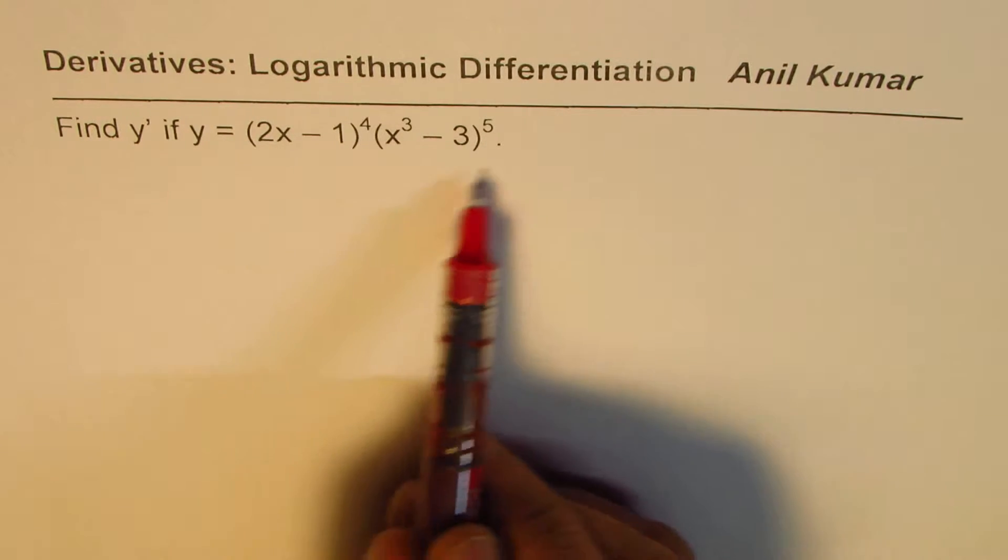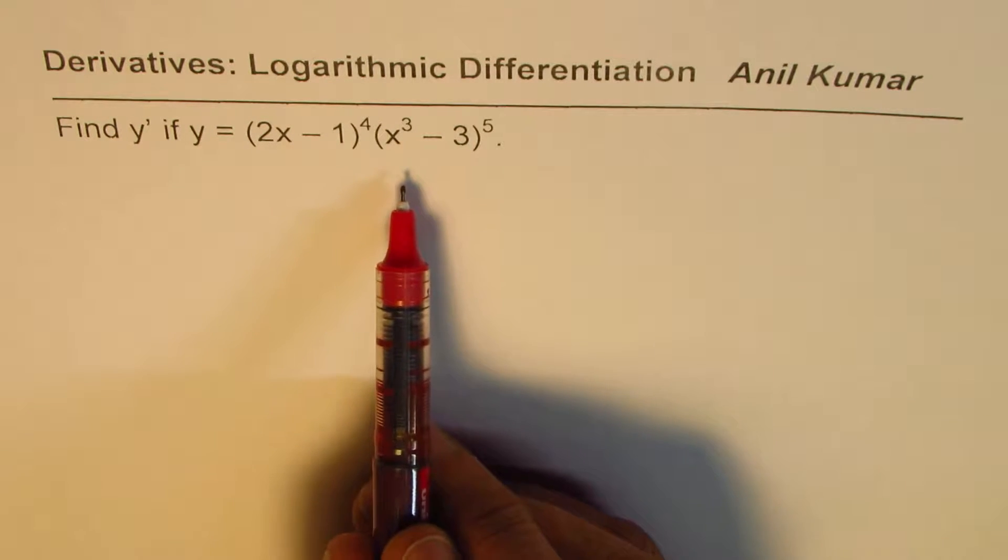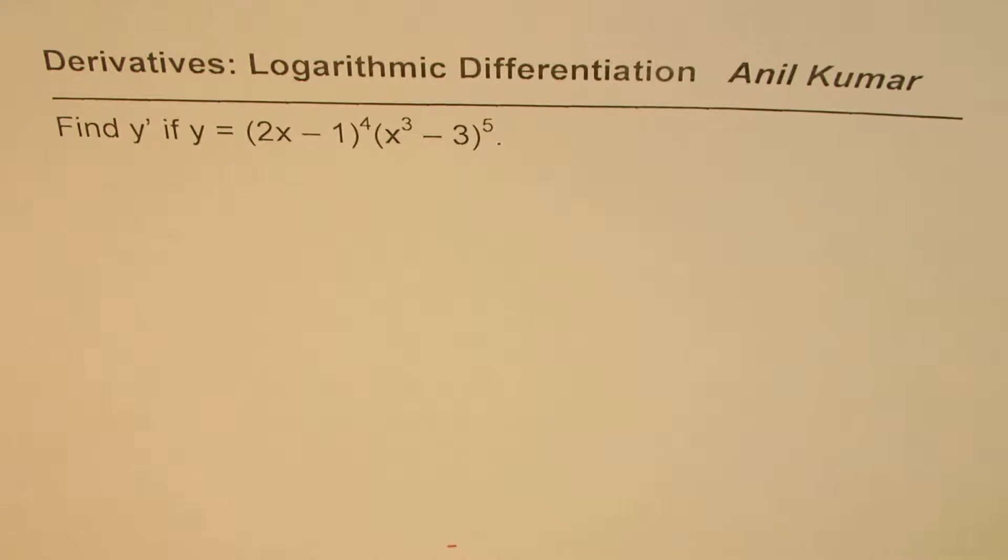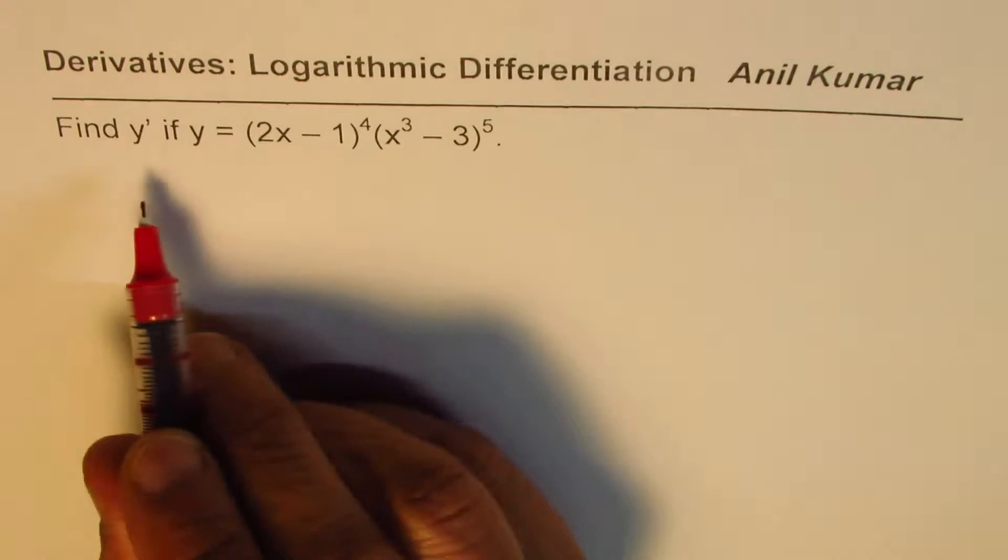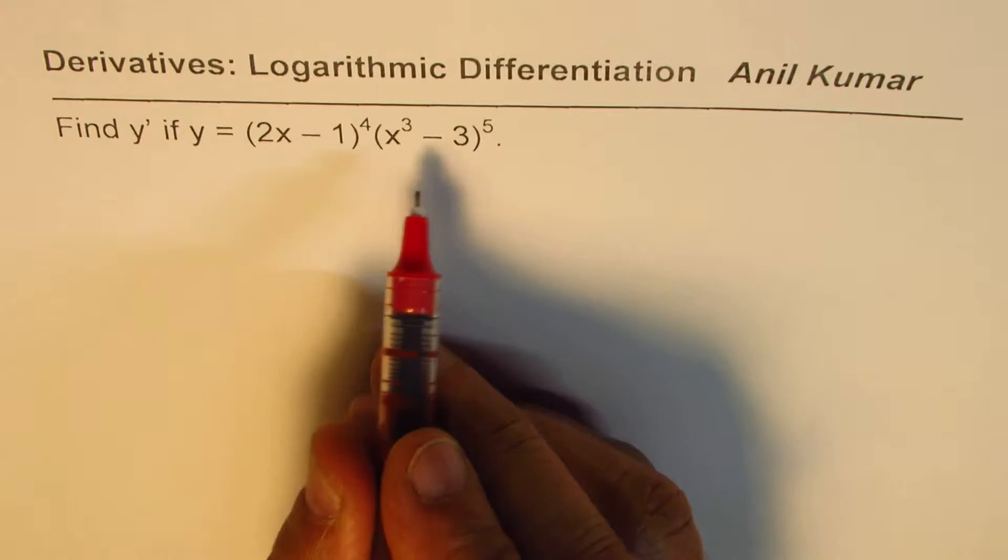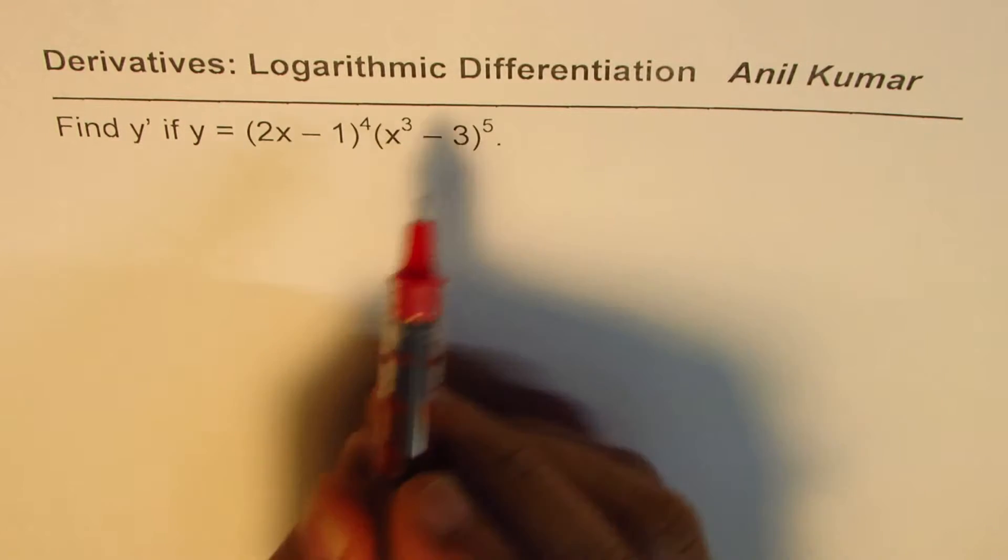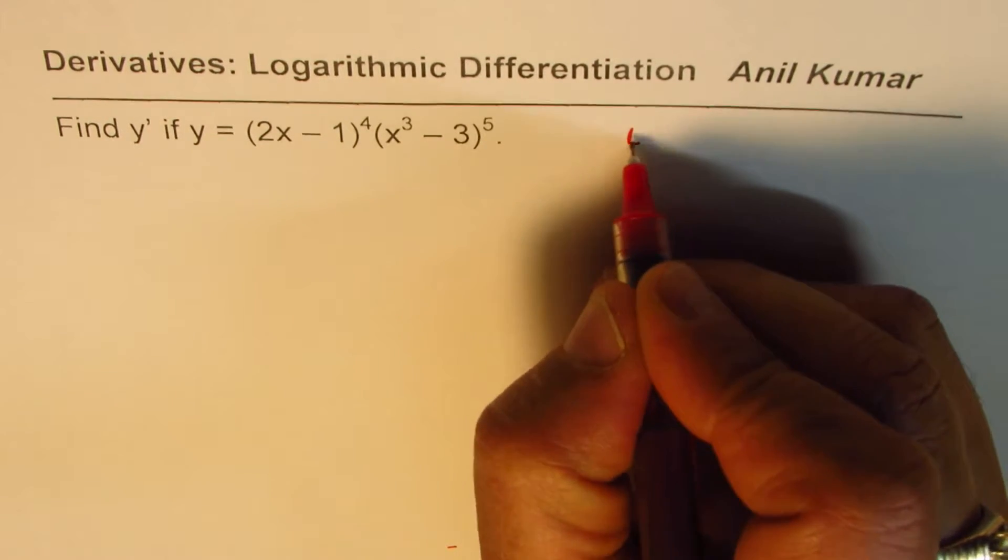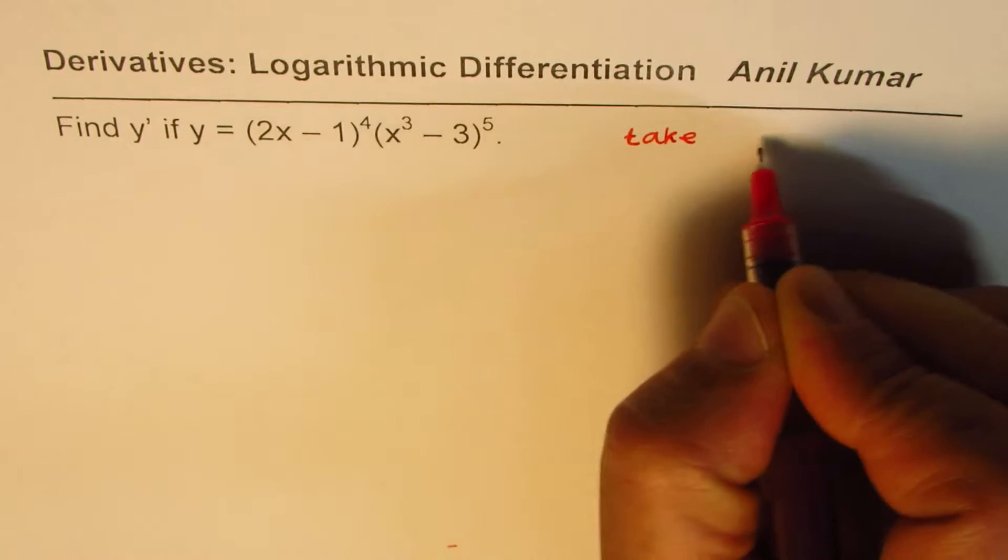You can always solve this using product rule, chain rule, and the combination of these. But we could also take logarithms on both sides, simplify the given function, and then find the derivative.